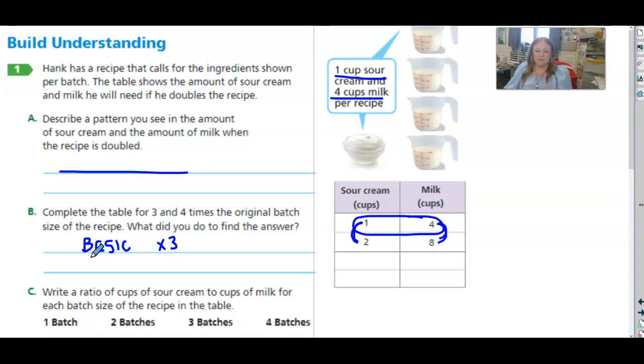And then we're going to repeat and do the basic ratio times four. So here we're going to times by three, and we're going to times by three. Then we're going to take the sour cream and times by four, and we're going to take the milk and times by four. So always go back to the basic ratio.